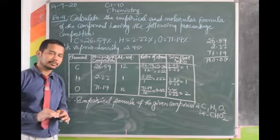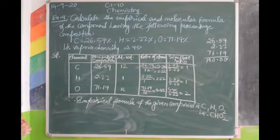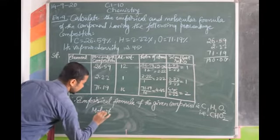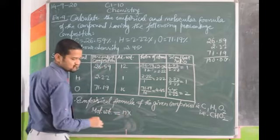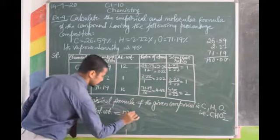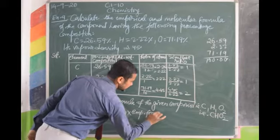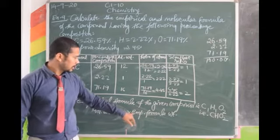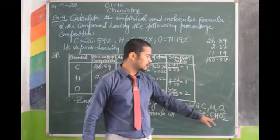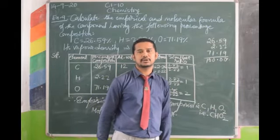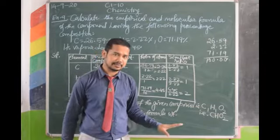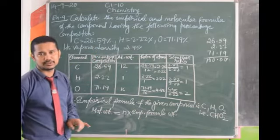Now find molecular weight. Molecular weight = N × empirical formula weight. Empirical formula weight = 12 + 1 + 2×16 = 12 + 1 + 32 = 45. But molecular weight is unknown and N is also unknown — two unknowns cannot be solved directly. So go back to any hint given in the question. The hint is: vapor density = 45.